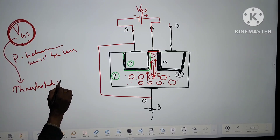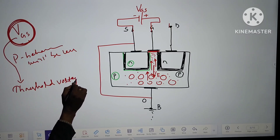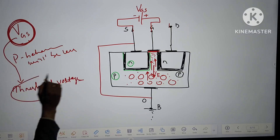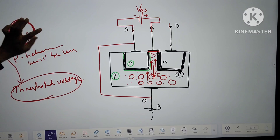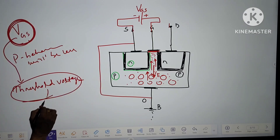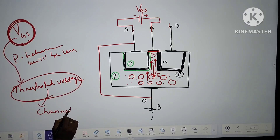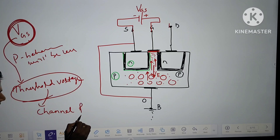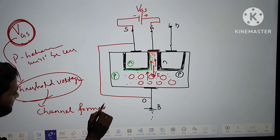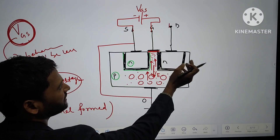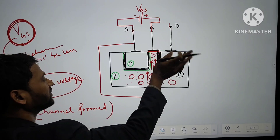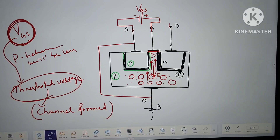What is threshold voltage? It is the minimum voltage across gate and source so that a complete channel is formed, allowing current to flow from drain to source.